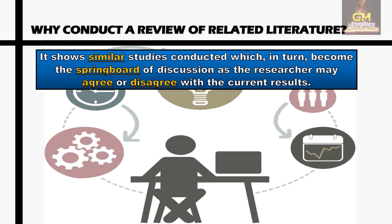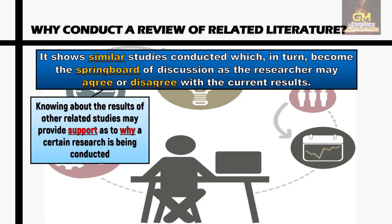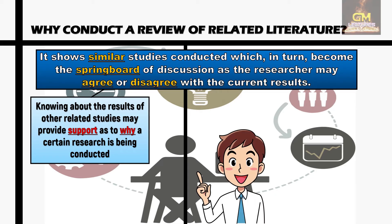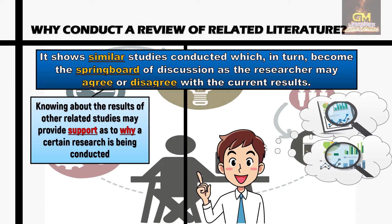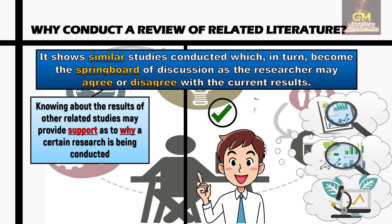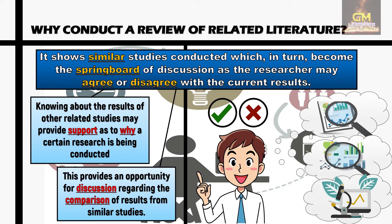Next, it shows similar studies conducted which, in turn, become the springboard of discussion as the researcher may agree or disagree with the current results. Knowing about the results of other related studies may provide support as to why a certain research is being conducted. The researcher would encounter different studies which are related to the topic, offering different results that he may agree or disagree with. This would also help the researcher explain his assumptions or expectations — whether to confirm, verify, or present alternative results to existing related studies. Furthermore, this provides an opportunity for discussion regarding the comparison of results from similar studies.